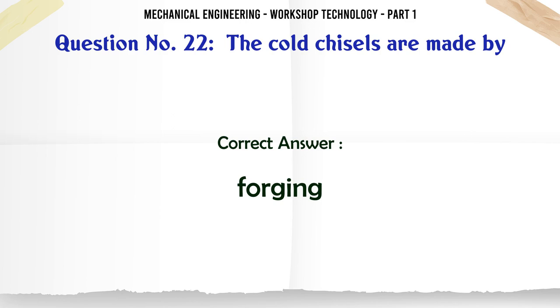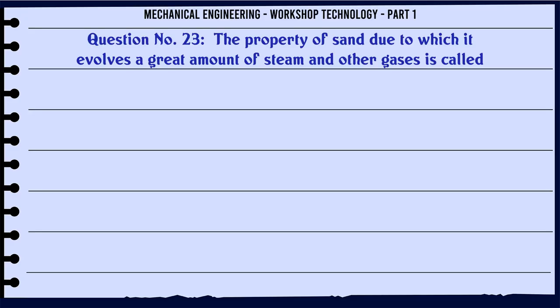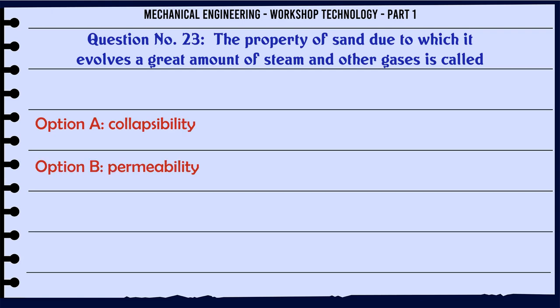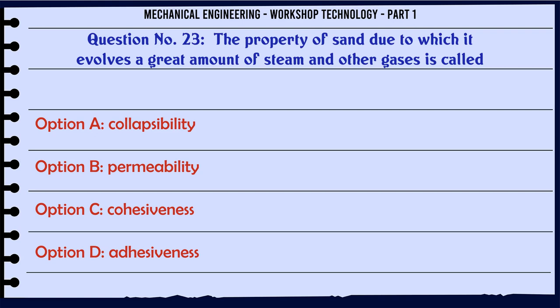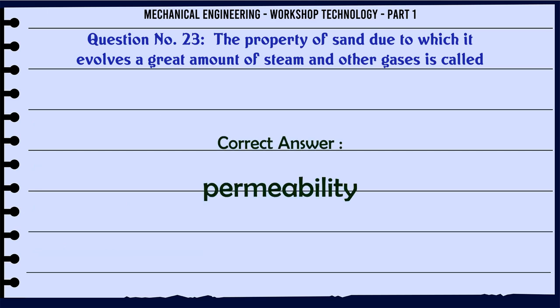The property of sand due to which it evolves a great amount of steam and other gases is called: A. Collapsibility. B. Permeability. C. Cohesiveness. D. Adhesiveness. The correct answer is: Permeability.